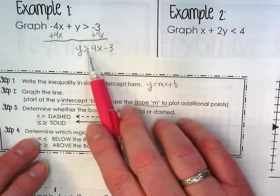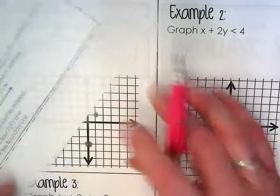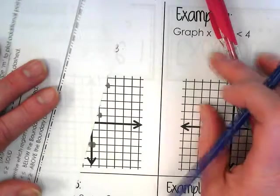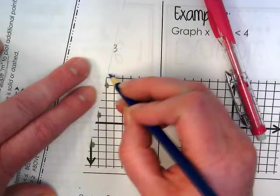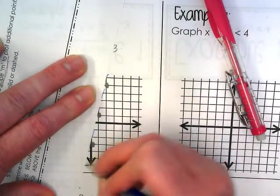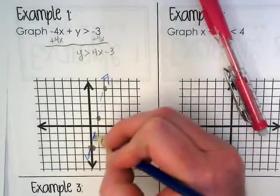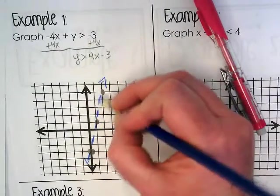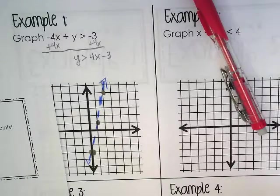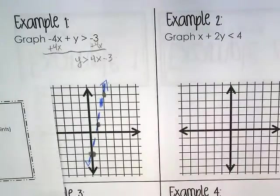What's this inequality? It's greater than, not greater than or equal to. So what kind of line are we going to do? A dashed line. And I like to actually use the colored pencils for this part of it. So just do a dashed line through those dots.